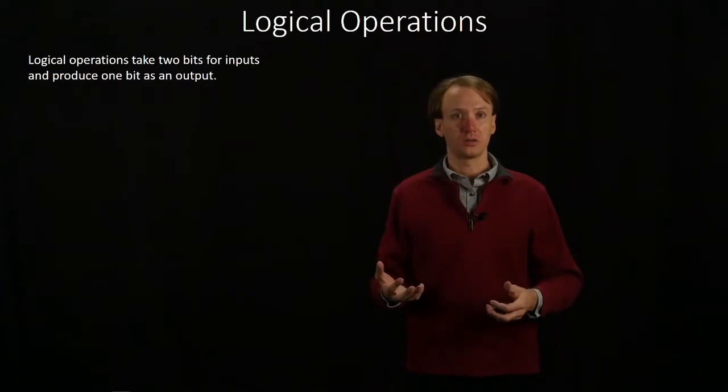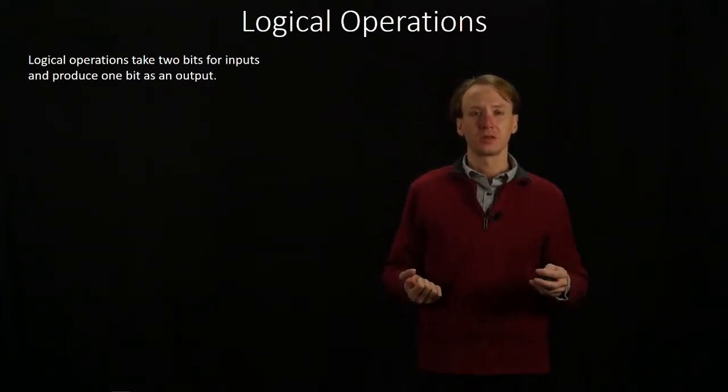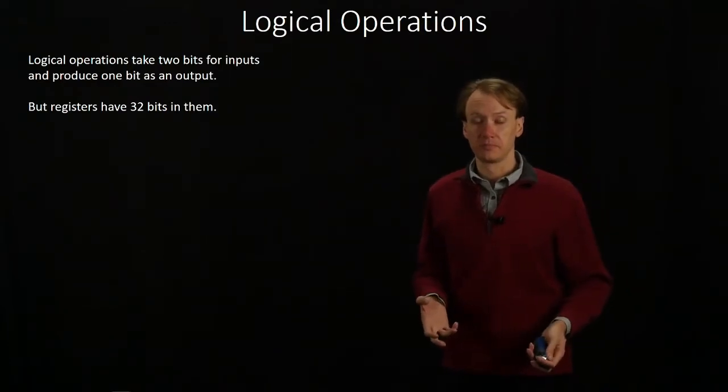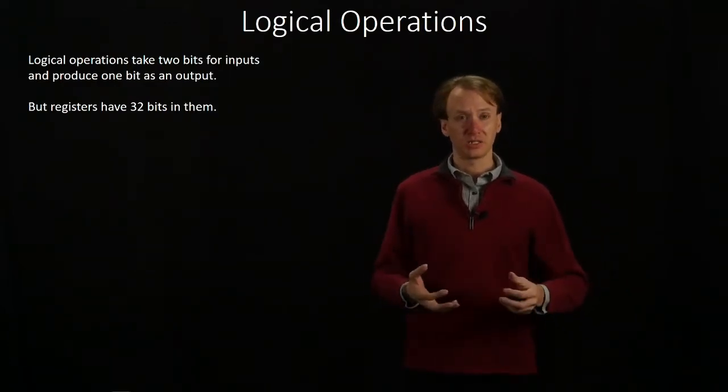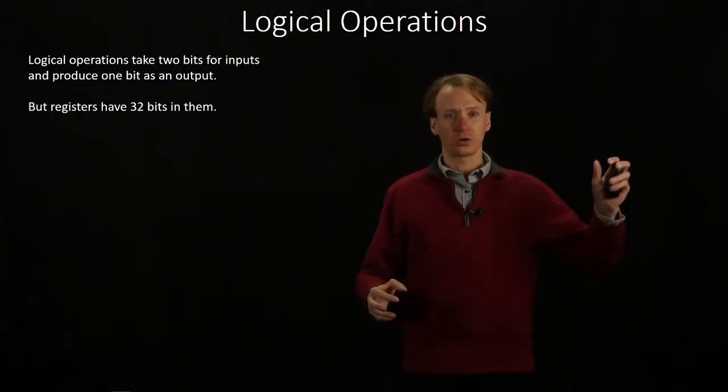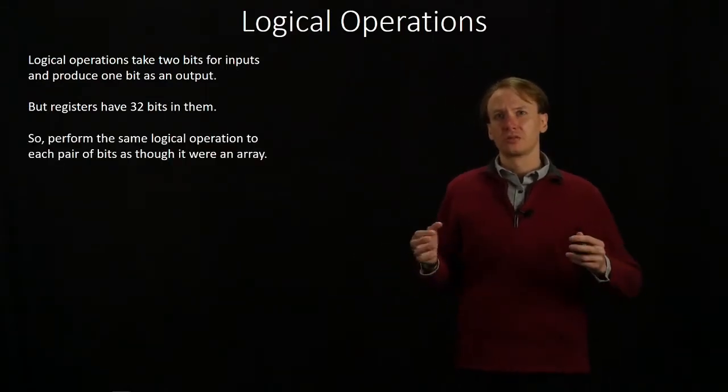So 1 AND 1 produces 1. But all of our registers have 32 bits to them. It probably doesn't make too much sense to say what is 376 and 429.